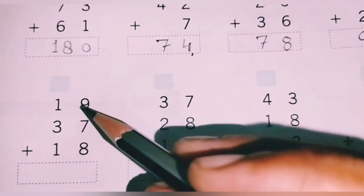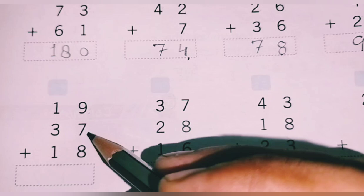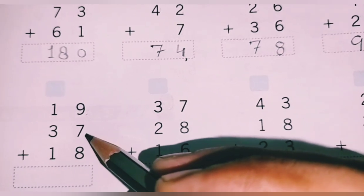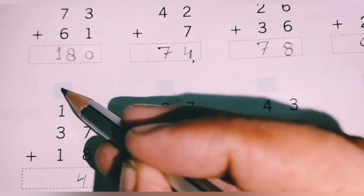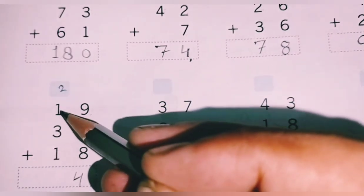Open number 9. 7. 9 plus 7, how much is it? 16. 8. 24. 4 here. 2 carry up.